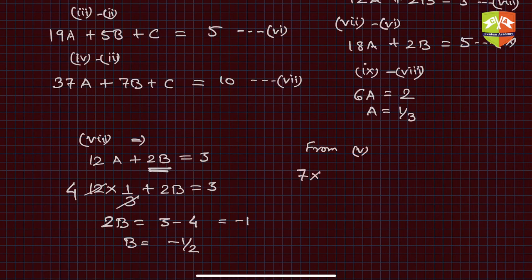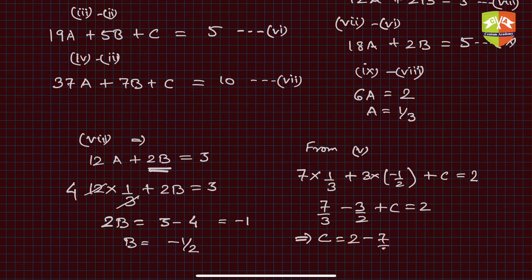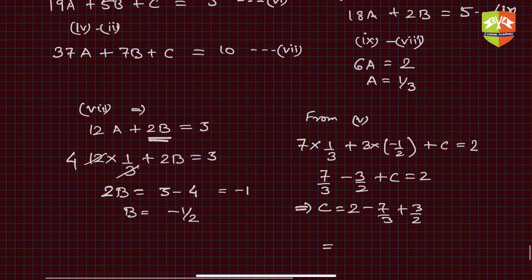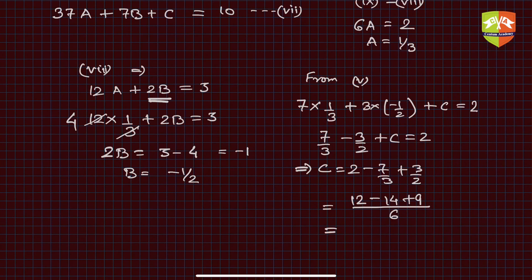From equation 5: c = 2 − 7/3 + 3/2. Taking LCM of 6: c = (12 − 14 + 9) / 6 = 7/6. So c = 7/6.